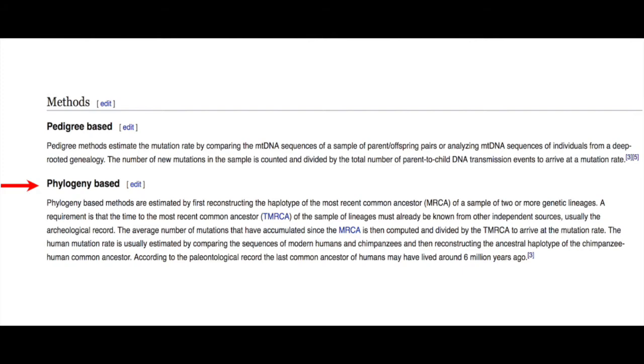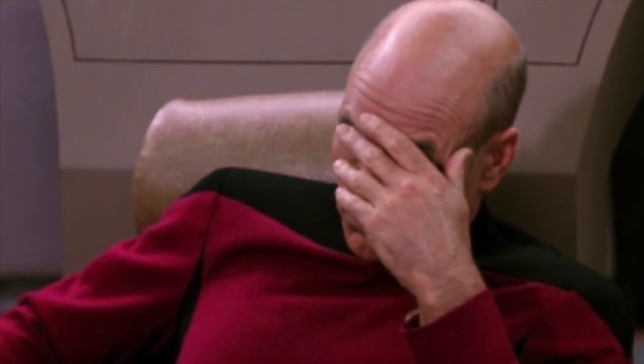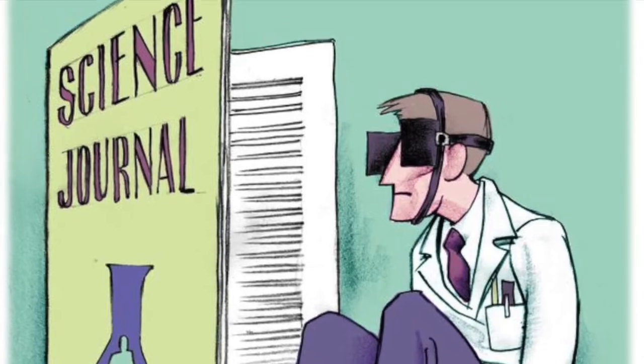Evolutionists build phylogenetic trees based on an assumed split or divergence, then compute the number of changes or substitutions on each branch, then date the split using fossils or geology, then infer the age of another split. Their entire evolutionary mutation rate is built around their own model — built off pure assumptions of the past that they admit they do not have evidence for — all to obtain answers that agree with them.